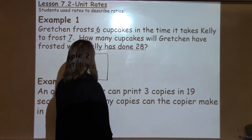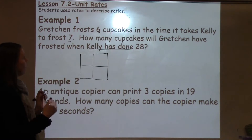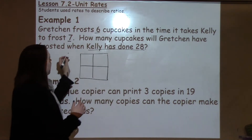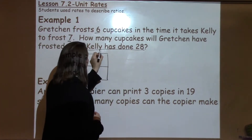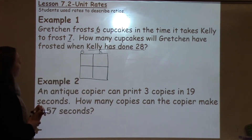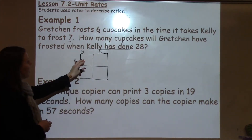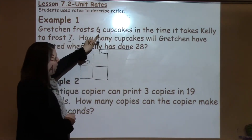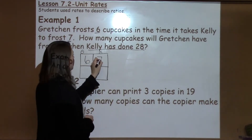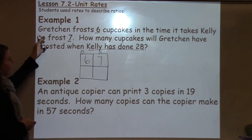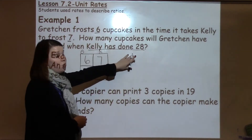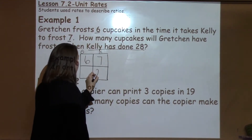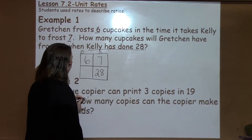A factor puzzle just looks simply like this, and I'm going to fill in what I already know. I'm going to write G for Gretchen and K for Kelly. I know when Gretchen frosts 6, from my problem, Kelly will frost 7. How many cupcakes will Gretchen have frosted — that's my unknown — when Kelly's done 28? So I know I've got my 28 down here.